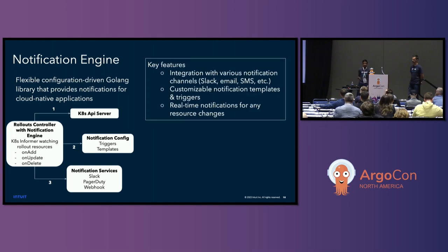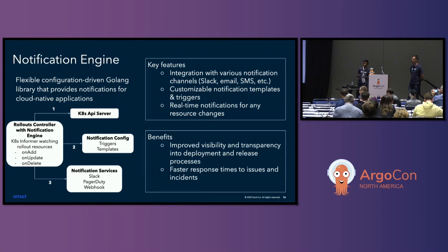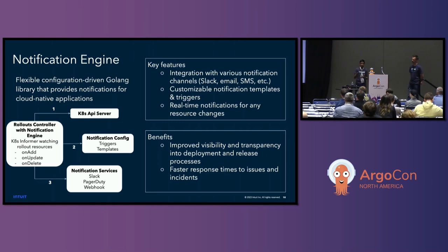The key features of Notification Engine are: out-of-box integration with a bunch of different providers, customizable templates, and the ability to create custom triggers for whatever your needs are — providing real-time notifications for any resource changes. The benefits we've seen include improved visibility and transparency into our development processes: if a rollout is completed, we can send an automated alert to Slack; if a rollout is aborted, we can create an incident so somebody can take a look, resulting in faster mitigation of incidents when they do happen.